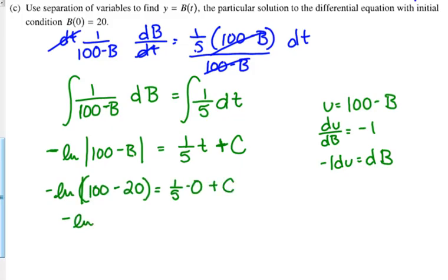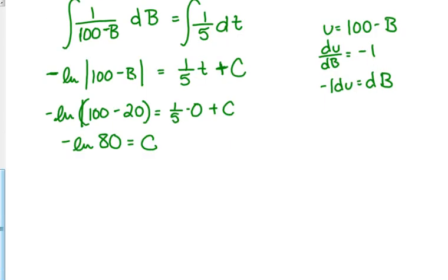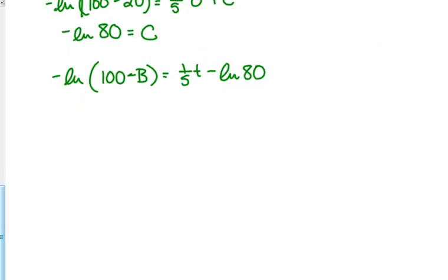We need to plug in our initial condition. When B is 20, time is 0. So, that means negative natural log of 80 is our C, our constant integration. So, let's go back to our expression, so that we can solve for B.